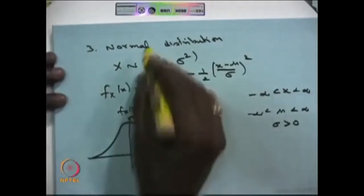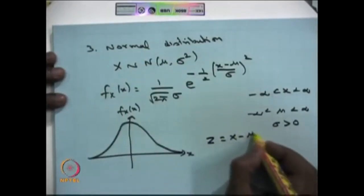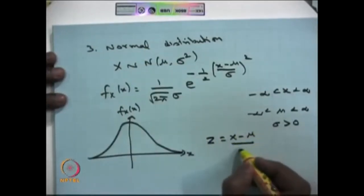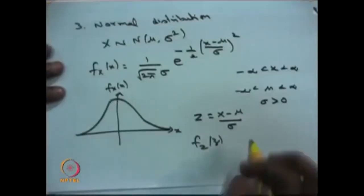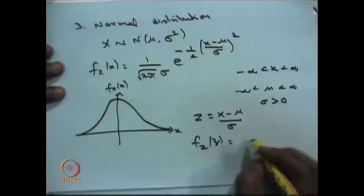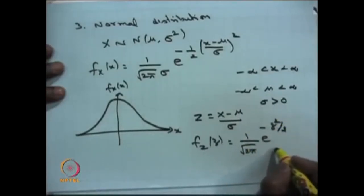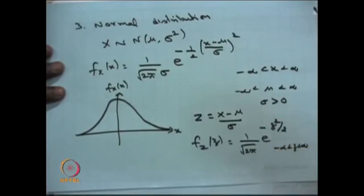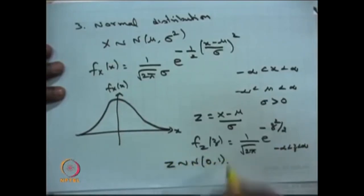You can always convert the normal distribution to the standard normal using the substitution z = (x - mu) / sigma. This gives the standard normal PDF: (1/sqrt(2*pi)) * e^(-z^2/2), where z lies between minus infinity and infinity. The standard normal distribution has mean 0 and variance 1.